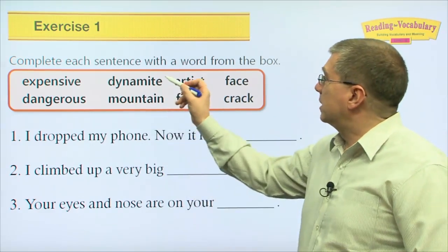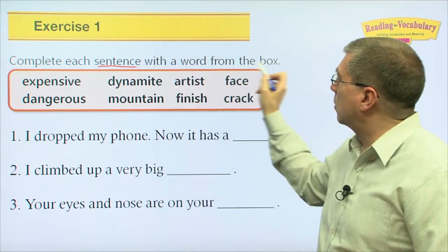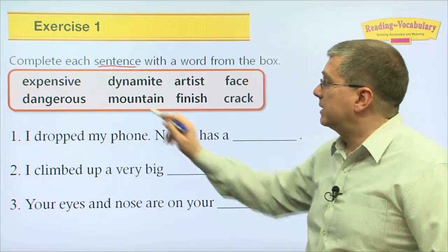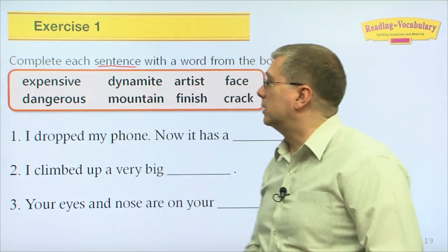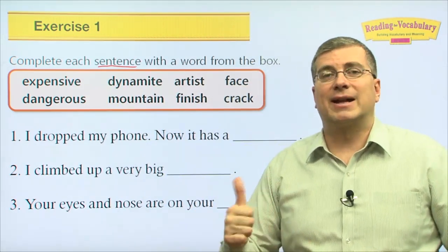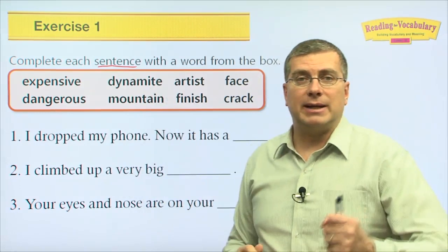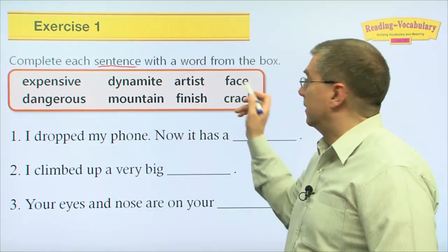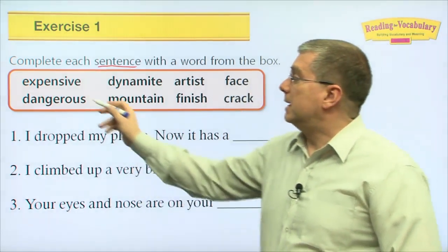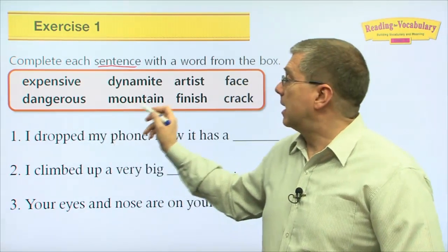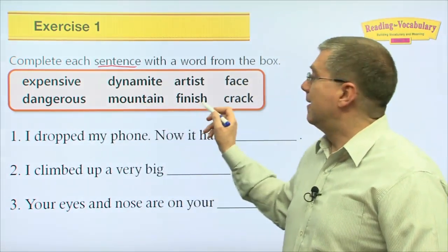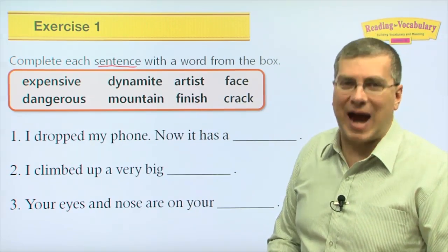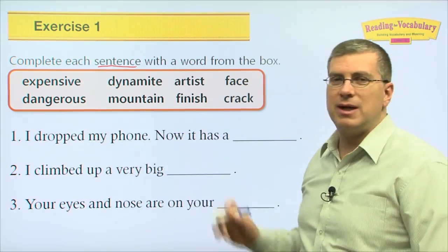That wraps up our words. Let's use the words to complete each sentence — we're going to complete sentences with words from the box. Parts of each sentence are missing, and we need to complete them. Let's go over these words: expensive, dynamite, artist, face, dangerous, mountain, finish, and crack.